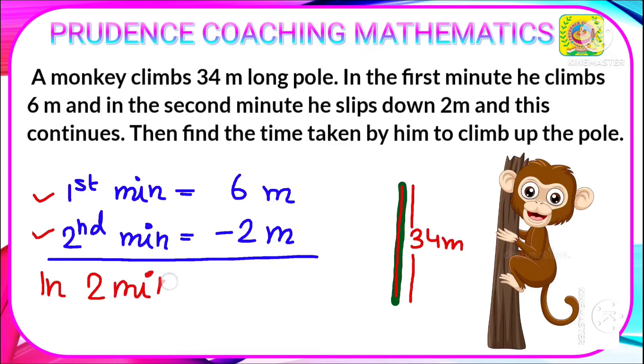what is going on is it can climb 6 meters, that is positive distance, and in the next minute it slips down, that means it's negative. So 6 minus 2, you are getting an average 4 meters.